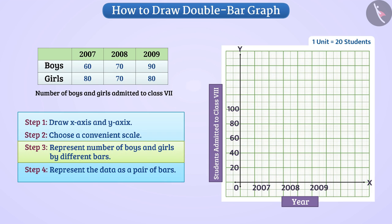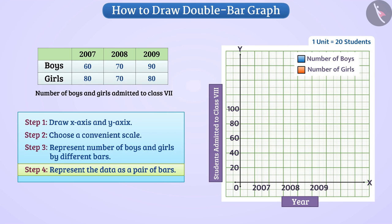Step 3: For showing the number of boys, we will take one color of bars, and for showing the number of girls, we will take bars of another color. Step 4: Now, we will represent the data as a pair of bars. To show that there were 60 boys and 80 girls in class 8 in 2007, we draw the bar representing number of boys as 60 and also draw the bar representing number of girls as 80.